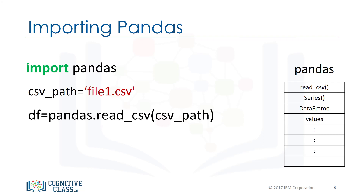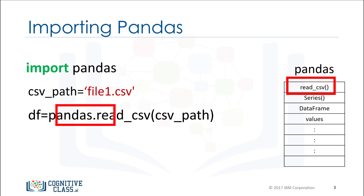Let's say we would like to load a CSV file using the Pandas built-in function read_csv. A CSV is a typical file type used to store data. We simply type the word Pandas, then a dot and the name of the function with all the inputs.